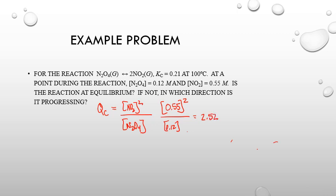Plugging in 0.55 M squared divided by 0.12 M gives a Qc of 2.52. Since 2.52 is larger than Kc = 0.21, the reaction is not at equilibrium. Because Qc is greater than Kc, there is too much product, so the reaction will shift to the left to reform reactants and reestablish equilibrium.